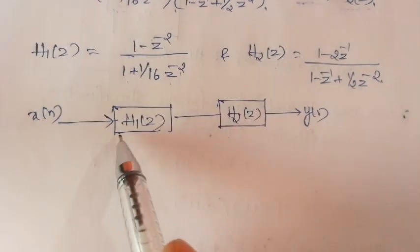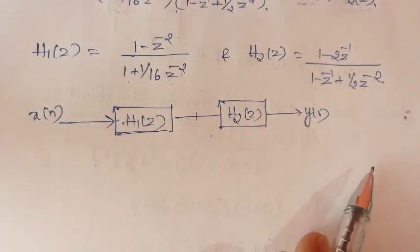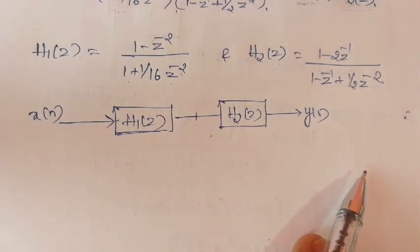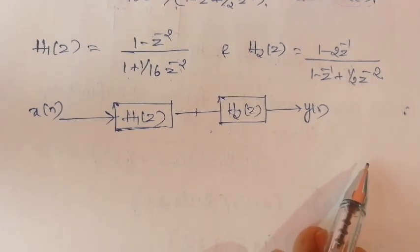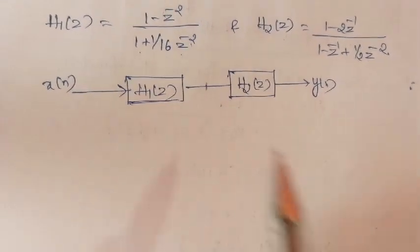These two are arranged in cascade connection. Let us realize H1 of z and H2 of z in terms of Direct Form 2 realization. Let us go step by step, one by one.